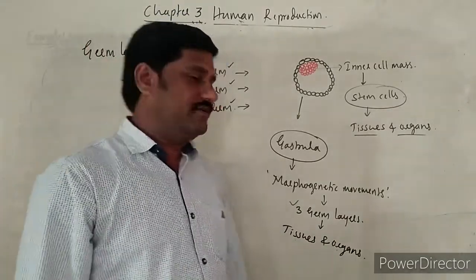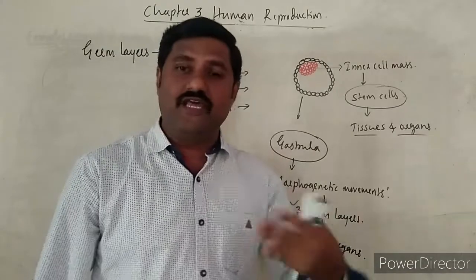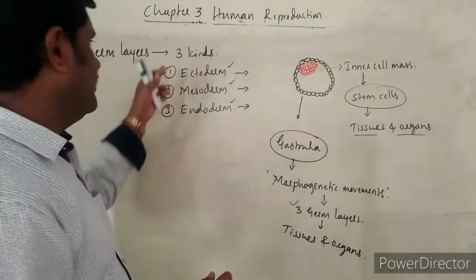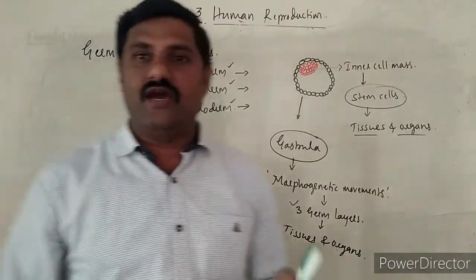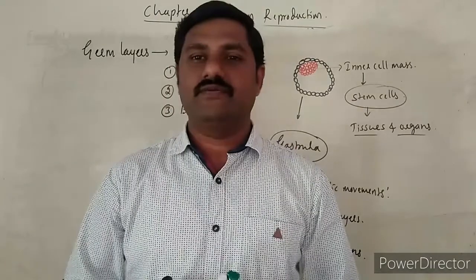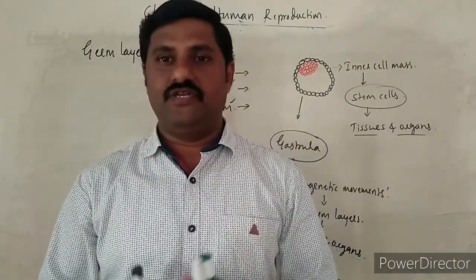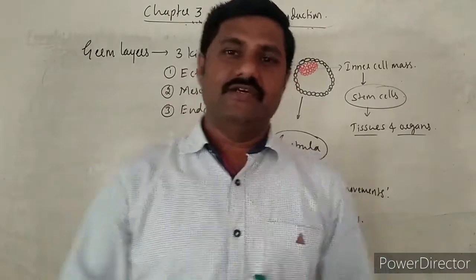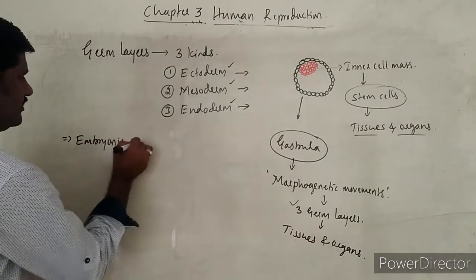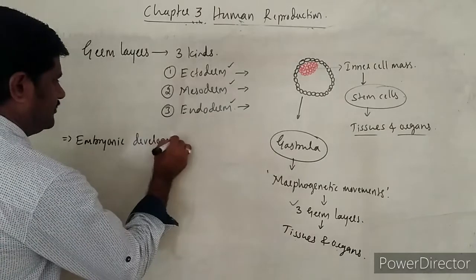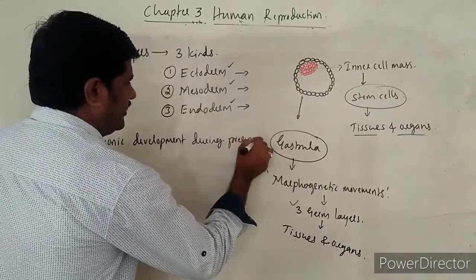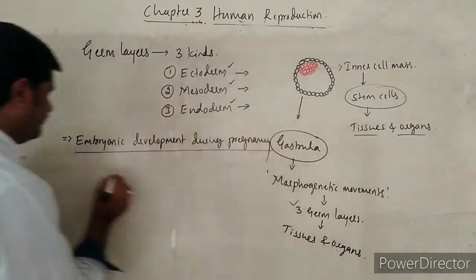We now know how the germ layers are formed and how different types of tissues as well as organs are derived from these three germ layers. Next, one more fact to be understood is embryonic development during the pregnancy period — embryonic development during the course of pregnancy.